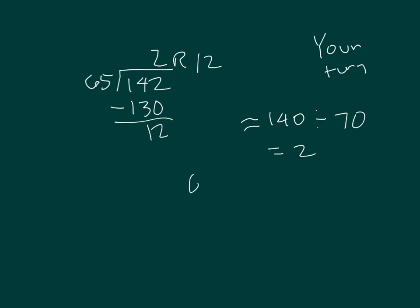And you run a check, hopefully. 65 times 2: 2 times 5 is 10, regroup of 1. 2 times 6 is 12, plus 1 is 13. Plus 12 is 142. So our solution checks. Read the whole equation with me: 142 divided by 65 equals 2 remainder 12.